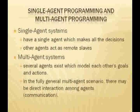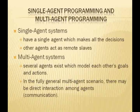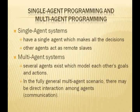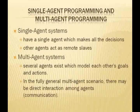Let's take a look at single and multi-agent systems. Basically, single agent systems have only one agent, which is responsible for making the decisions. All other agents act as what we call remote slaves. This means all the other agents carry out whatever task is instructed to them from the primary agent.